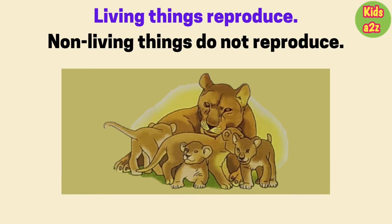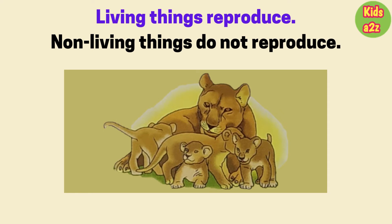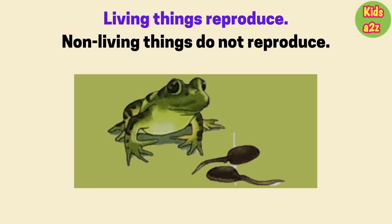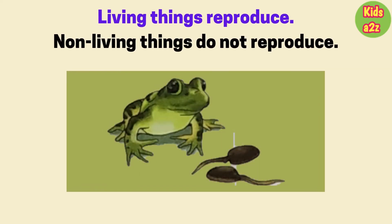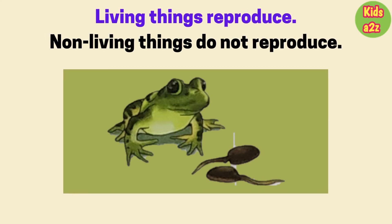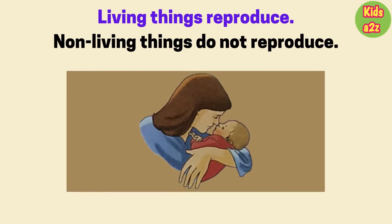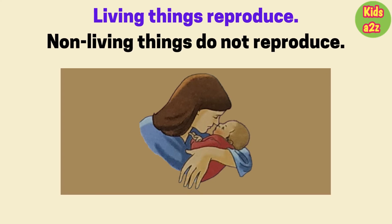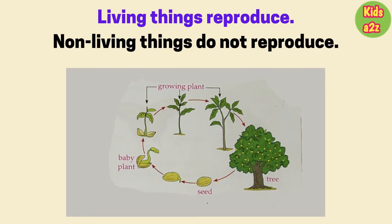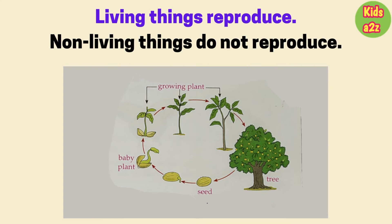Non-living things do not reproduce. All animals produce young ones of their own kind. Some animals like cats and dogs give birth to babies. Some animals like frogs and fish lay eggs. Birds also lay eggs, and young ones hatch out from the eggs. In human beings, women give birth to babies. Plants also reproduce — many plants have seeds and these seeds grow into new plants.